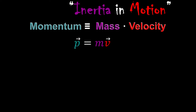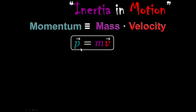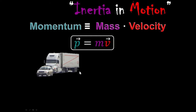We're going to use p as our letter to abbreviate momentum. Notice that velocity is a vector quantity — direction matters — and so is momentum. That is our big definition of momentum: it's mass times velocity.